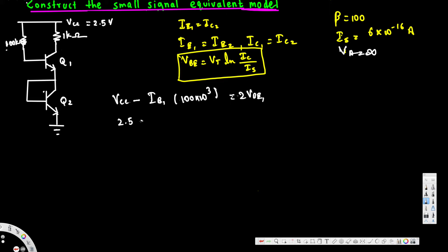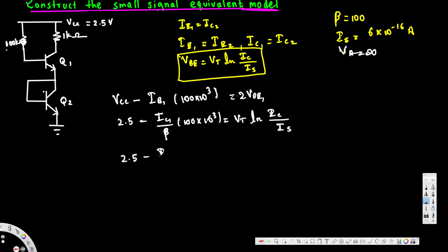Substituting values: 2.5 minus ic1 over beta times 100 times 10³ equals vt times ln(ic1 / Is). With vt = 26 times 10⁻³ and Is = 6 times 10⁻¹⁶, we can now solve for ic1.